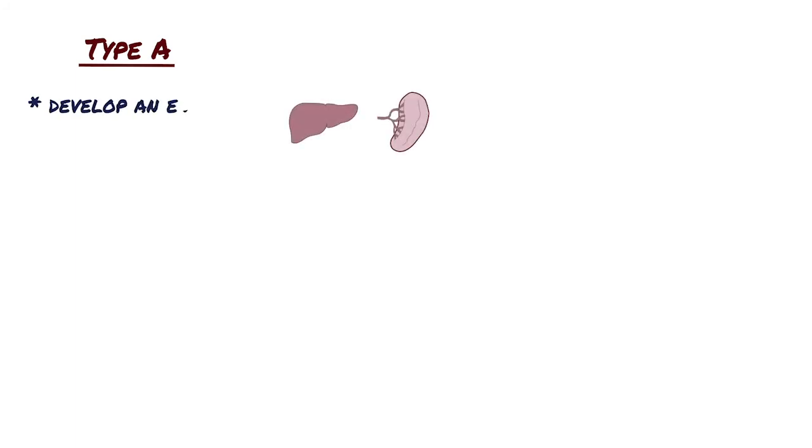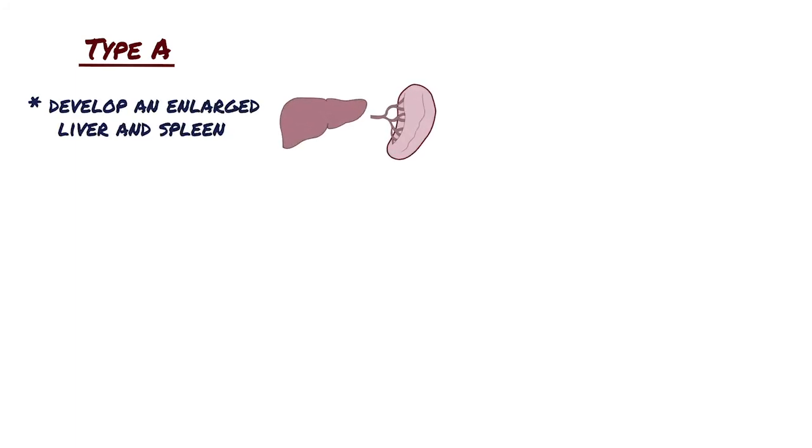Clinical manifestations in type A disease may be present at birth and almost invariably become evident by the age of 6 months. Infants with Niemann-Pick disease type A usually develop an enlarged liver and spleen by the age of 3 months and fail to gain weight.